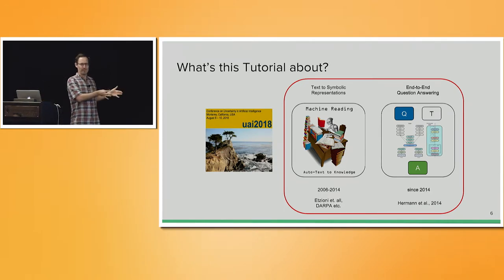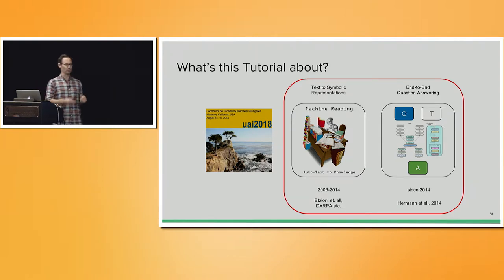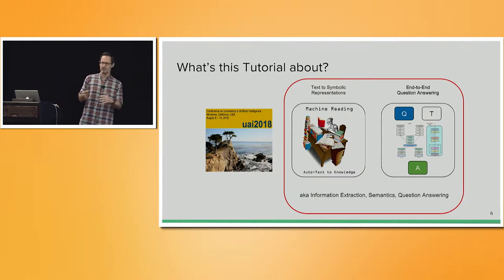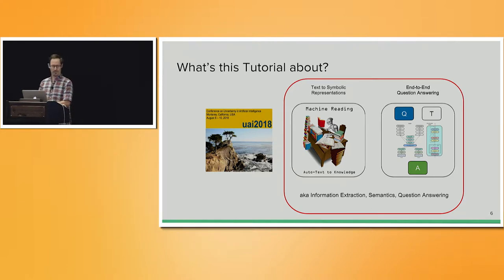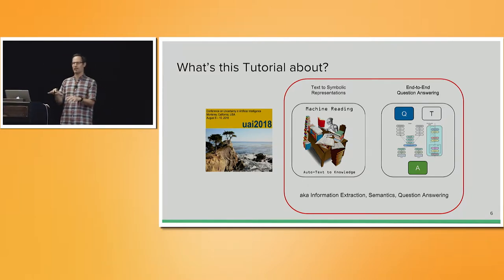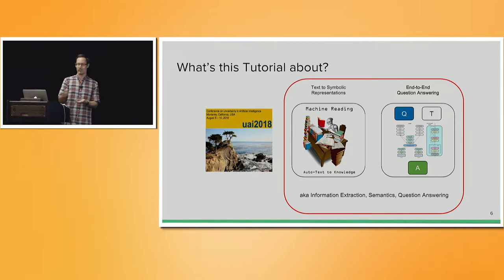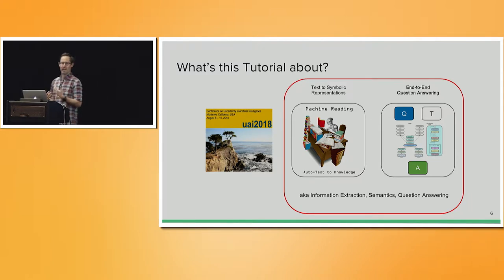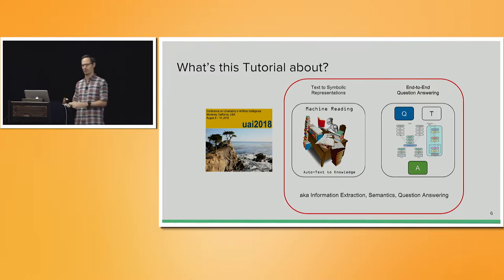This tutorial is not about the first interpretation of machine reading — the OCR-based one — but the other two, which are in the literature also often referred to as information extraction, semantics and semantic parsing, and question answering. When you actually look at NLP conferences, there is a specific area for this whole domain of information extraction, semantics, and question answering, and today, by far, that is the most prominent, most busy area of research in terms of submissions. So it's definitely a big topic within NLP.